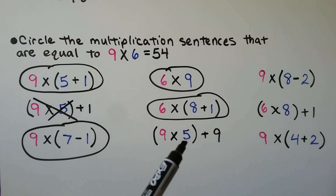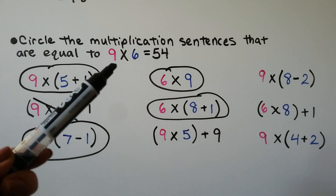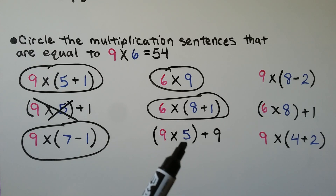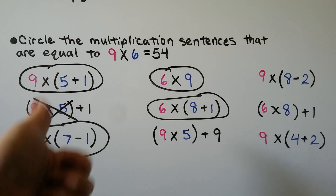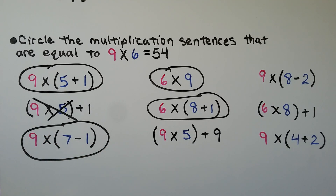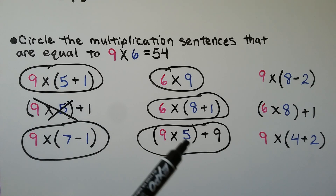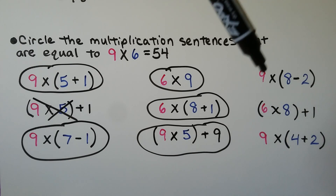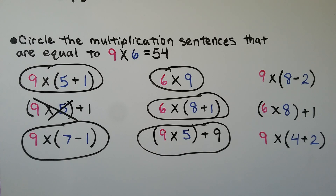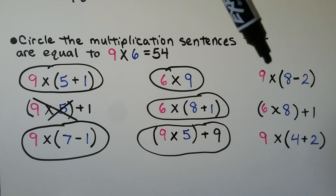What about six times (eight plus one)? If we do the parentheses first, eight plus one is nine, so this would be six times nine — the same as nine times six — and we can circle that one. What about nine times five plus nine more? If we had nine groups of five and added another nine, nine times five is 45, plus nine equals 54. Yes, that's equal to 54, so we can circle that one. What about nine times (eight minus two)? Eight minus two is six, so this would be nine times six — we can circle that one too.